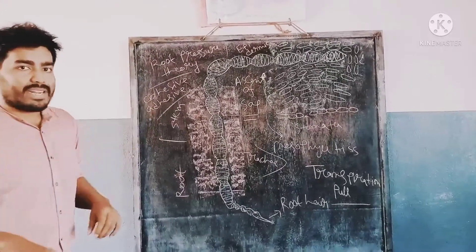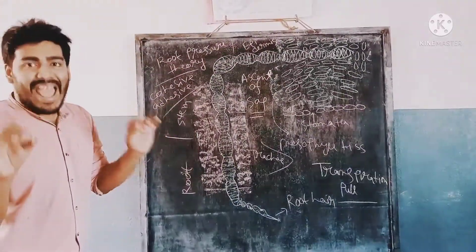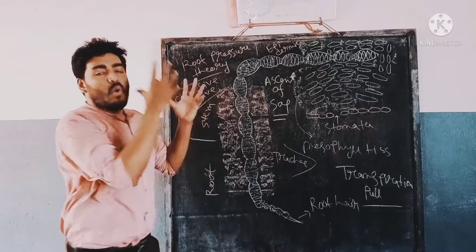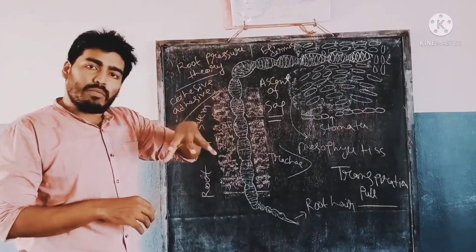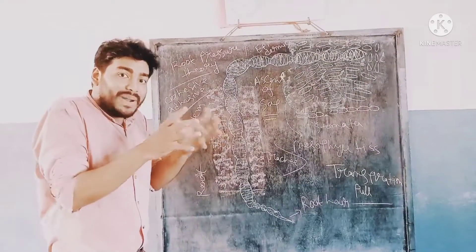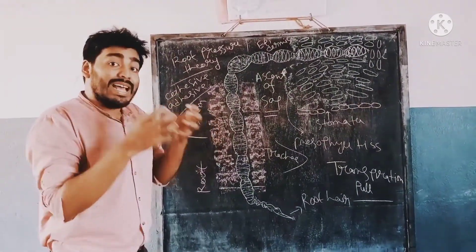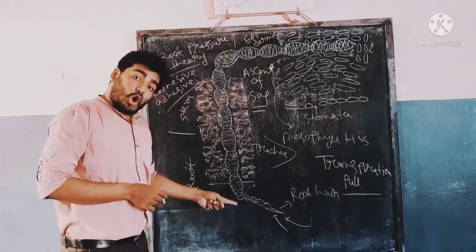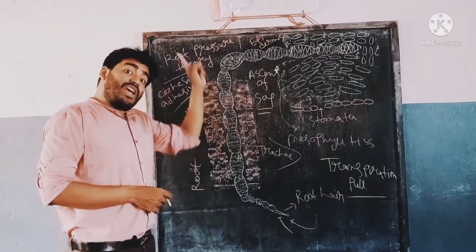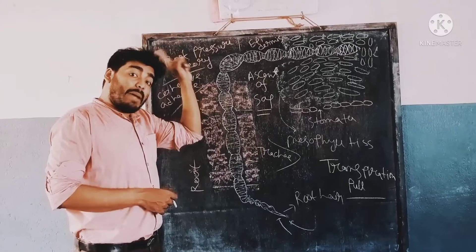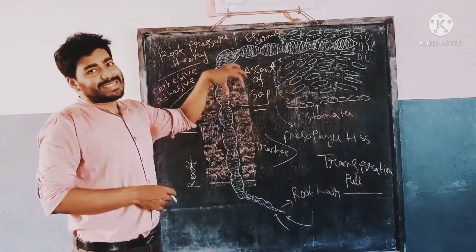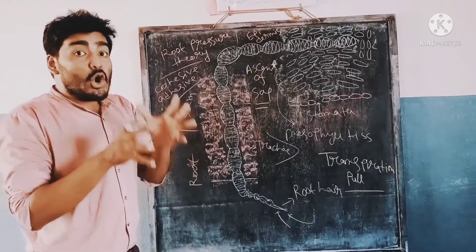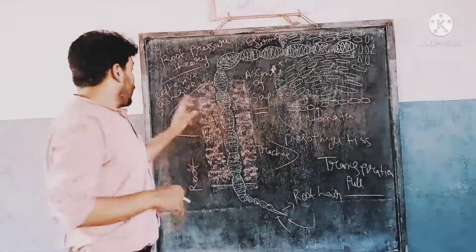The root pressure theory was proposed by scientists Stephen and Hales. When water comes out as water vapor into the air from the trees, a root pressure or hydrostatic pressure is created in the trees. Water then comes in from the root and root cortex, and through the xylem it reaches the apical portion of the trees. This is the transpiration pull, created by osmotic pressure — this is the root pressure theory.